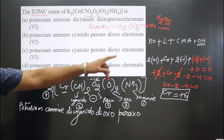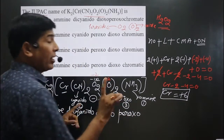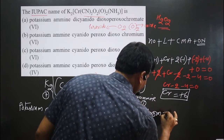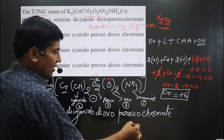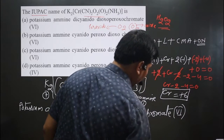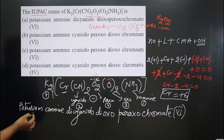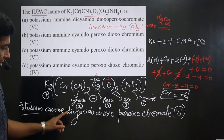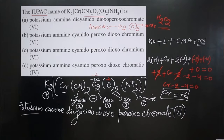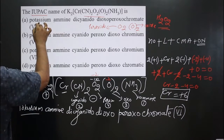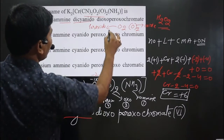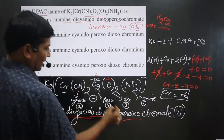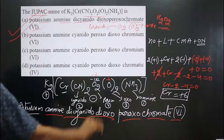All ligands are now written in order. The central metal atom in this anionic complex takes the special name chromate. The oxidation number +6 is written in Roman numerals as (VI). The full name of the complex is: potassium amine dicyanido dioxo peroxo chromate(VI). Checking against the options — potassium, amine, dicyanido, dioxo, peroxo, chromate(VI) — option A is correct.